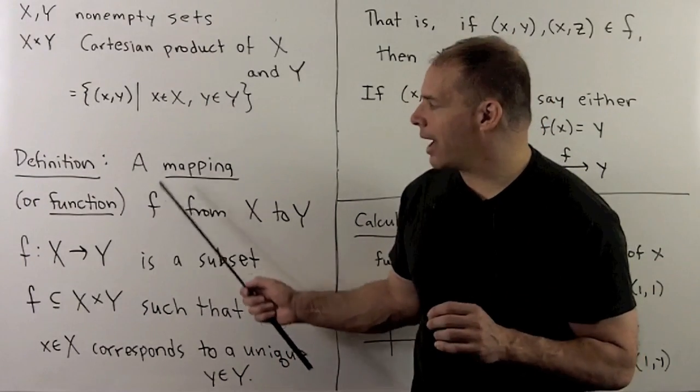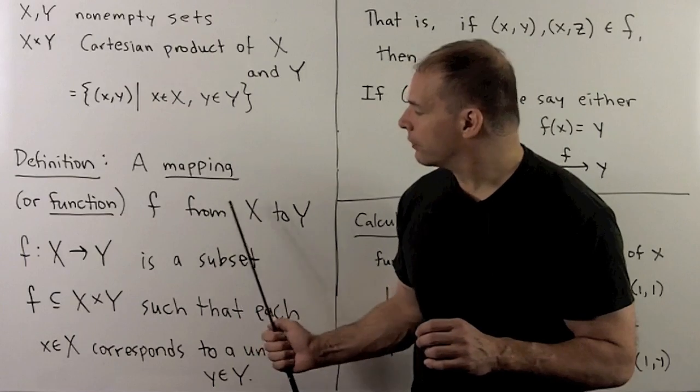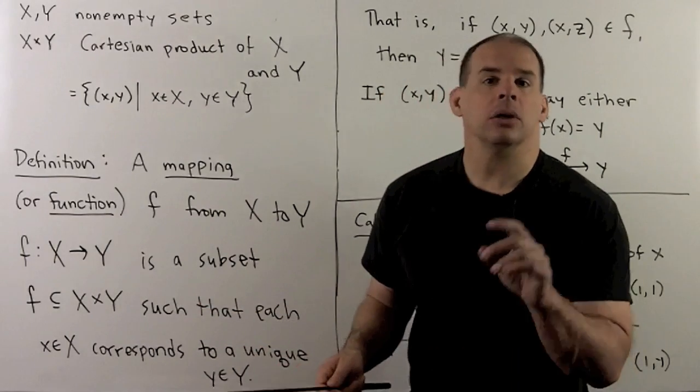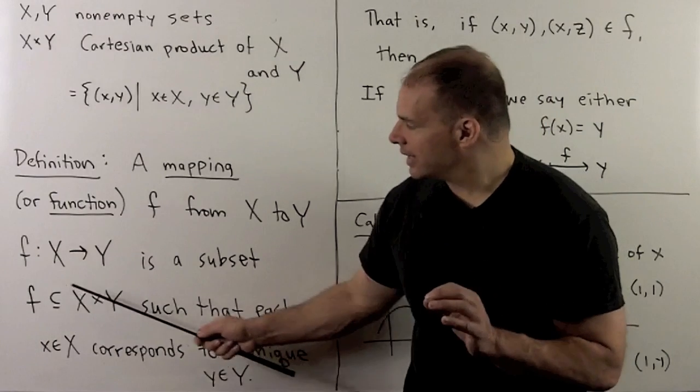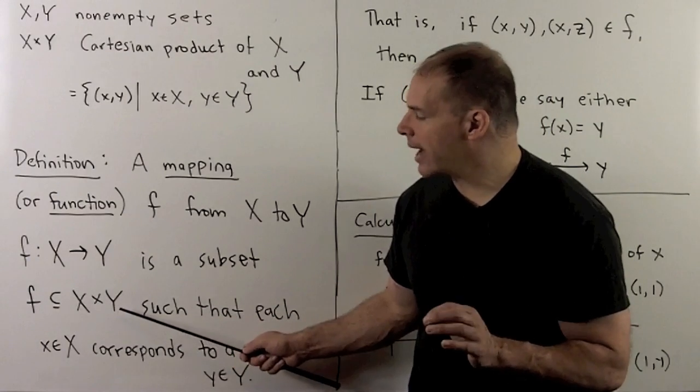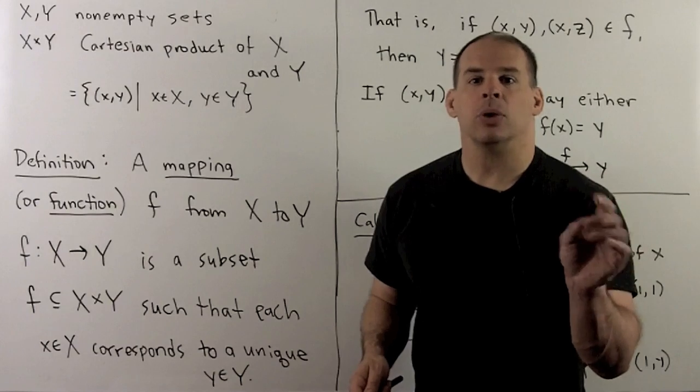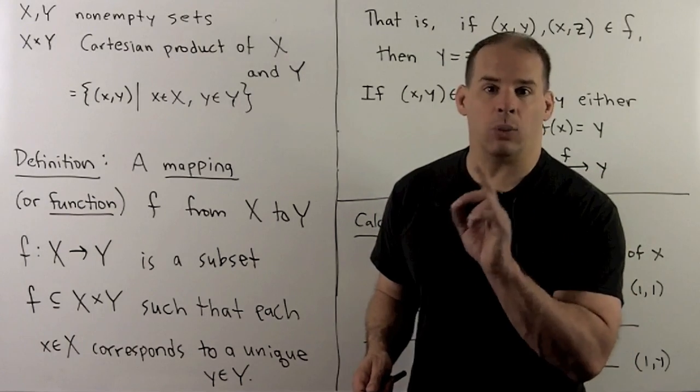Then we have definition. We'll say a mapping or function f from x to y, and we denote this as so, will be a subset f contained in the Cartesian product of x and y, such that, to each x in x, we assign a unique y in y.